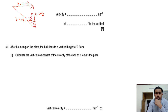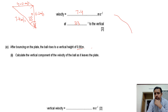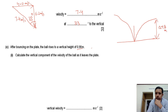The resultant velocity is 7.4 meters per second and the angle is 33 degrees. Now after bouncing on the plate, the ball rises to a vertical height of 0.98 meters. When the ball hits the plate it rises back up, so its new height after the bounce is 0.98 meters. The initial vertical velocity after the bounce is required, and since the ball's motion is horizontal at the top, the final vertical velocity is 0.